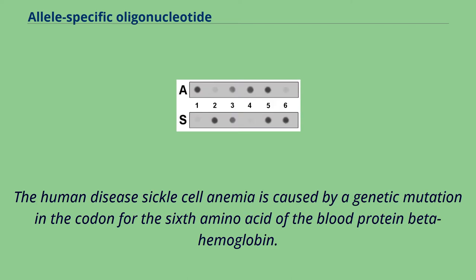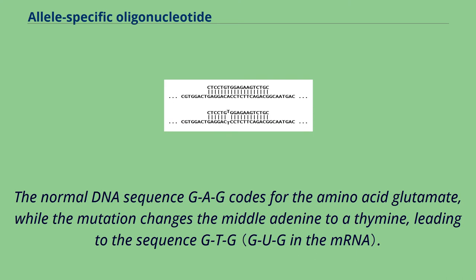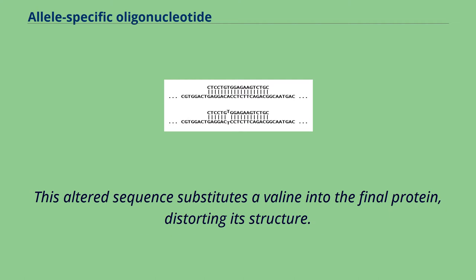The human disease sickle cell anemia is caused by a genetic mutation in the codon for the sixth amino acid of the blood protein beta hemoglobin. The normal DNA sequence GAG codes for the amino acid glutamate, while the mutation changes the middle adenine to a thymine, leading to the sequence GTG. This altered sequence substitutes a valine into the final protein, distorting its structure.